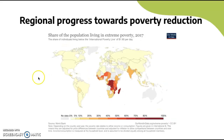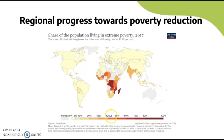Here we have a chloropleth map showing regional progress towards poverty reduction. A value of 100% means that 100% of individuals are living below the international poverty line. The highest concentrations are around Central Africa, and as you move to the 40–50% range, it's also in Central Africa, with some of Western and Southern Africa also represented.